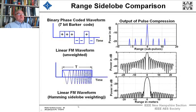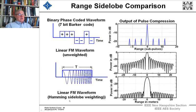Now let's look at range side lobe comparisons. Binary phase coded waveforms with a 7-bit Barker code — here's the output of pulse compression. With a linear FM waveform that's unweighted, you'd see here's the output: 13 dB side lobes. But if you take a linear FM waveform and put good weighting on — Hamming weighting — you're getting down 40 dB-ish. So someone would use linear FM rather than a 7-bit Barker code. That shows you that you get better range side lobes with the linear FM.